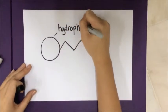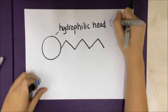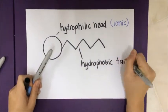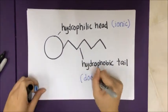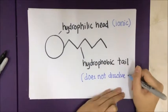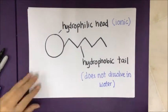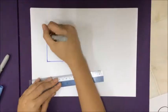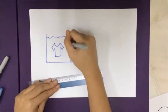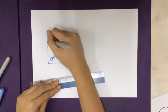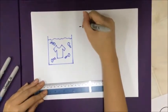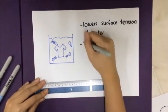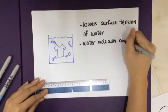A detergent molecule can be separated into two parts: the hydrophilic head, which is ionic, and the hydrophobic tail, which does not dissolve in water. Detergent is a surfactant which helps in cleansing unwanted particles on the surface of the cloth.